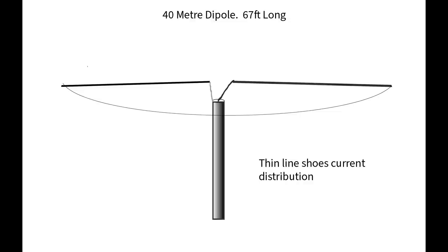First we'll take a look at the dipole. We've got a dipole here on the screen fed with coax cable. I've ignored a balun for the moment because I want to keep it simple. So this dipole is resonant on 40 meters and is 67 foot long. And the thin line shows the current distribution.